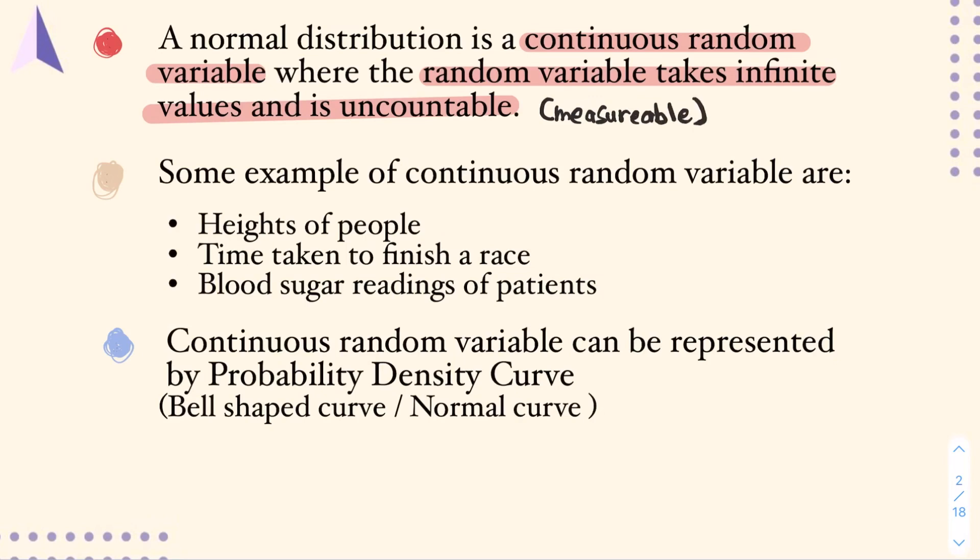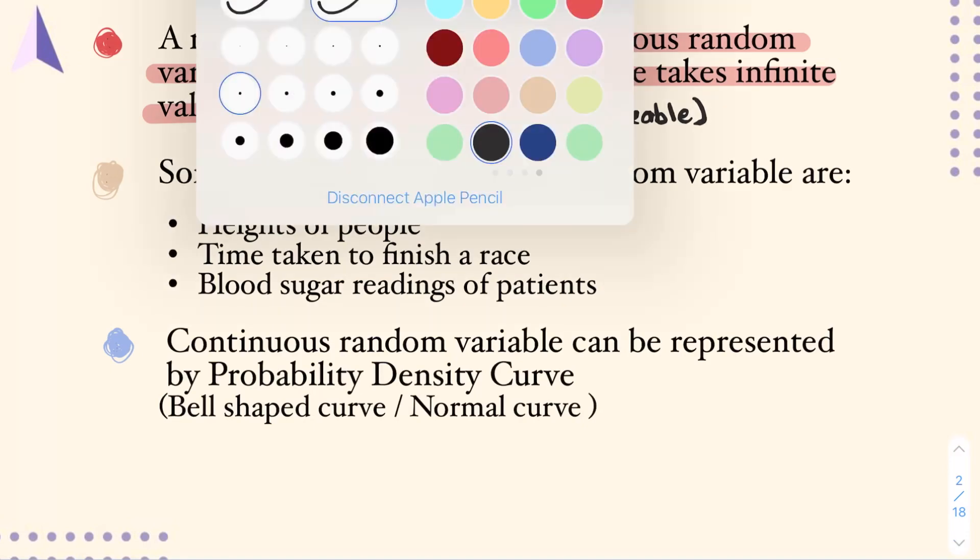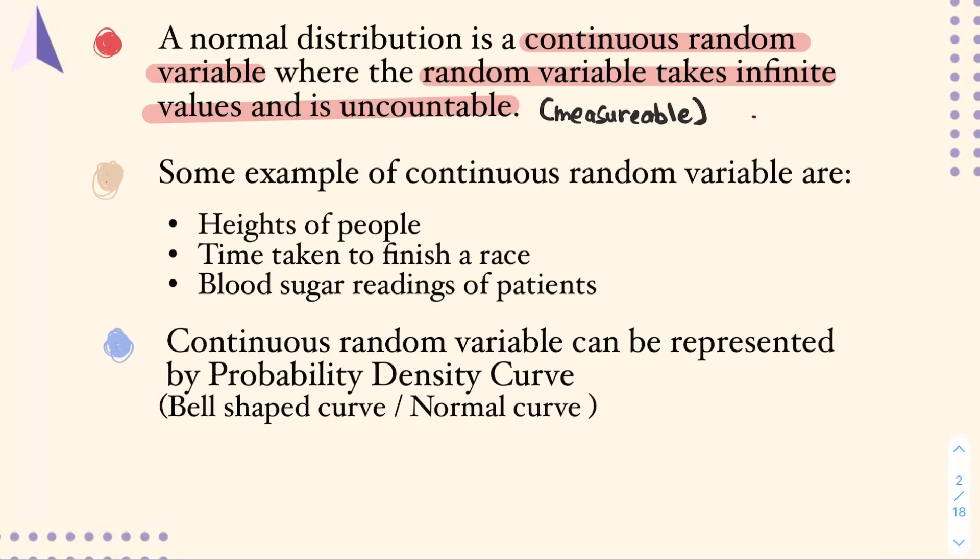Now, what does it mean by uncountable or something measurable? It means that between two numbers, there is an infinite range of values. For example, if you look at between 0 to 1, there is an infinite range of values where you can have 0.11, 0.1112, 0.11113, and so on.